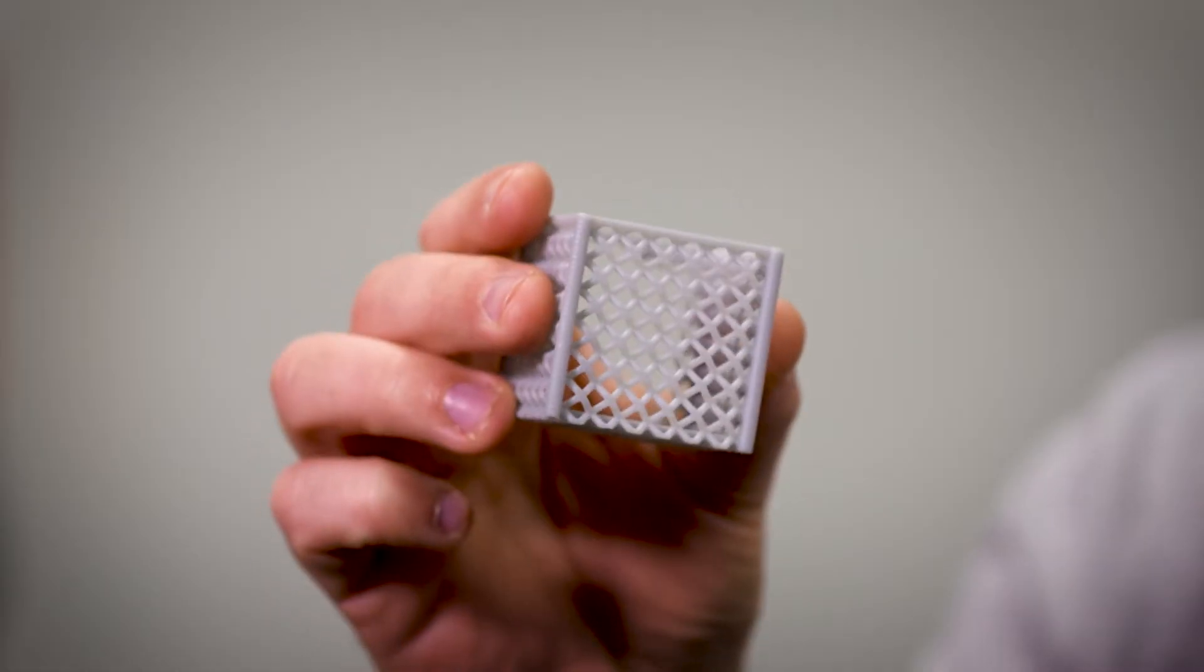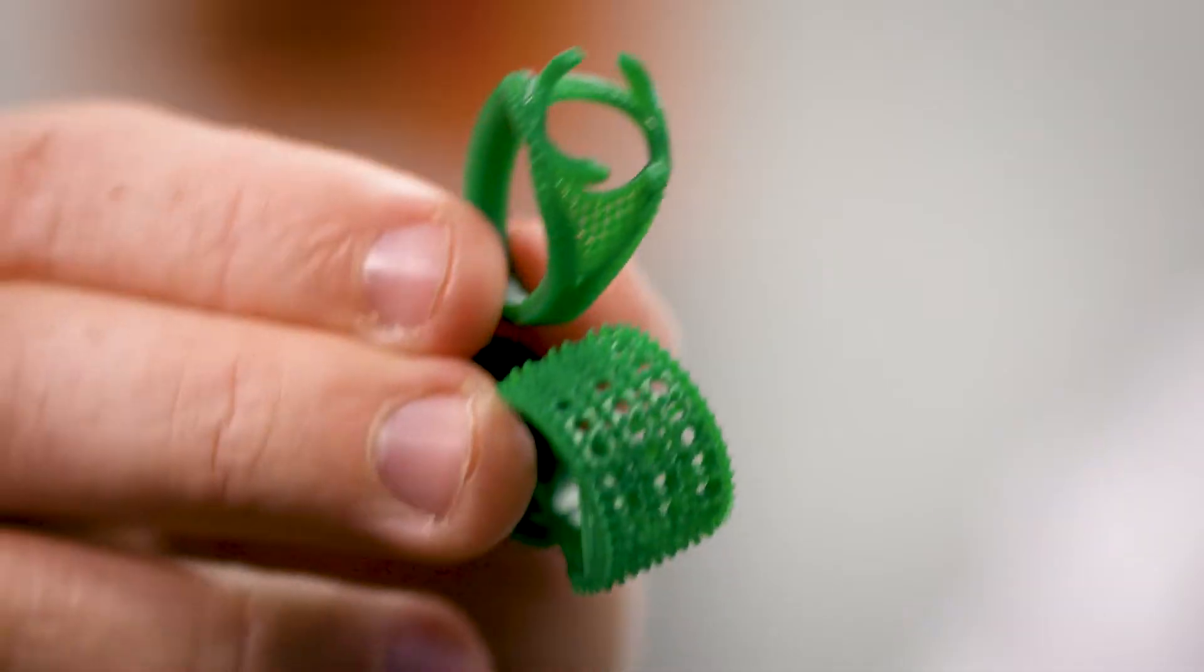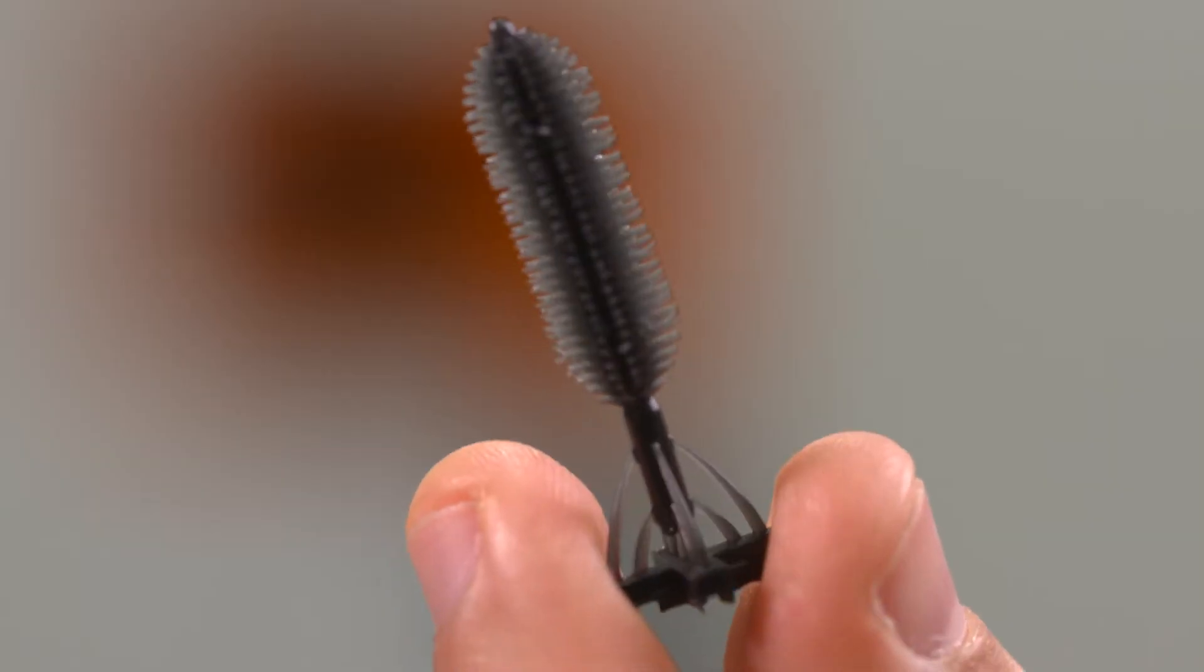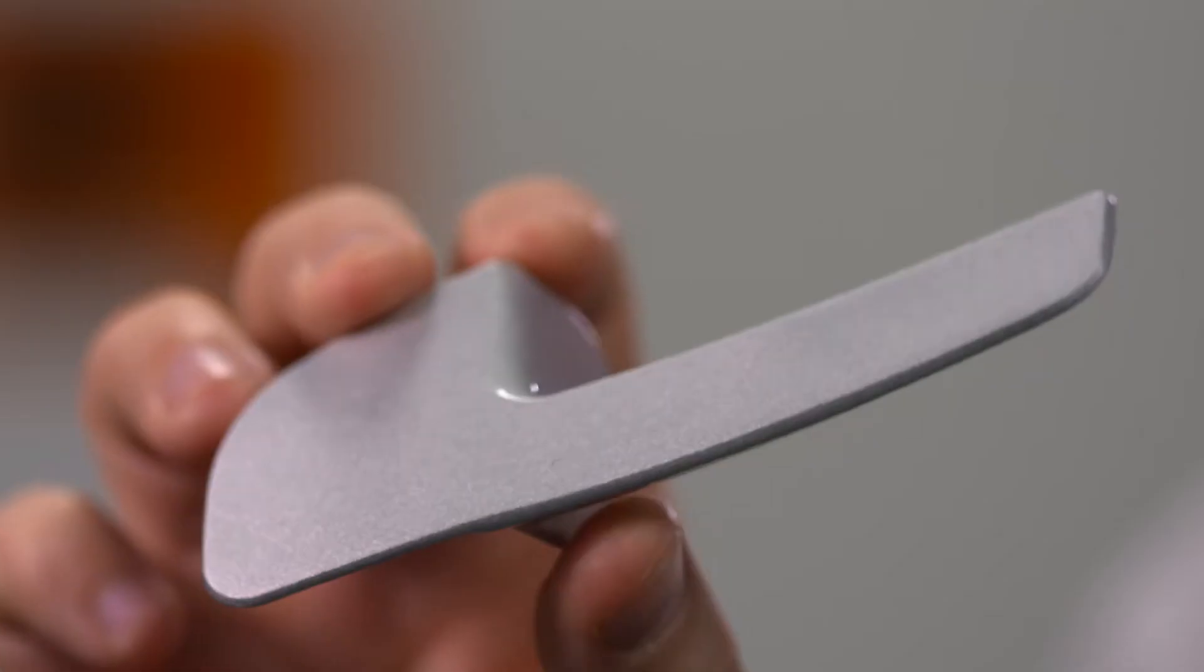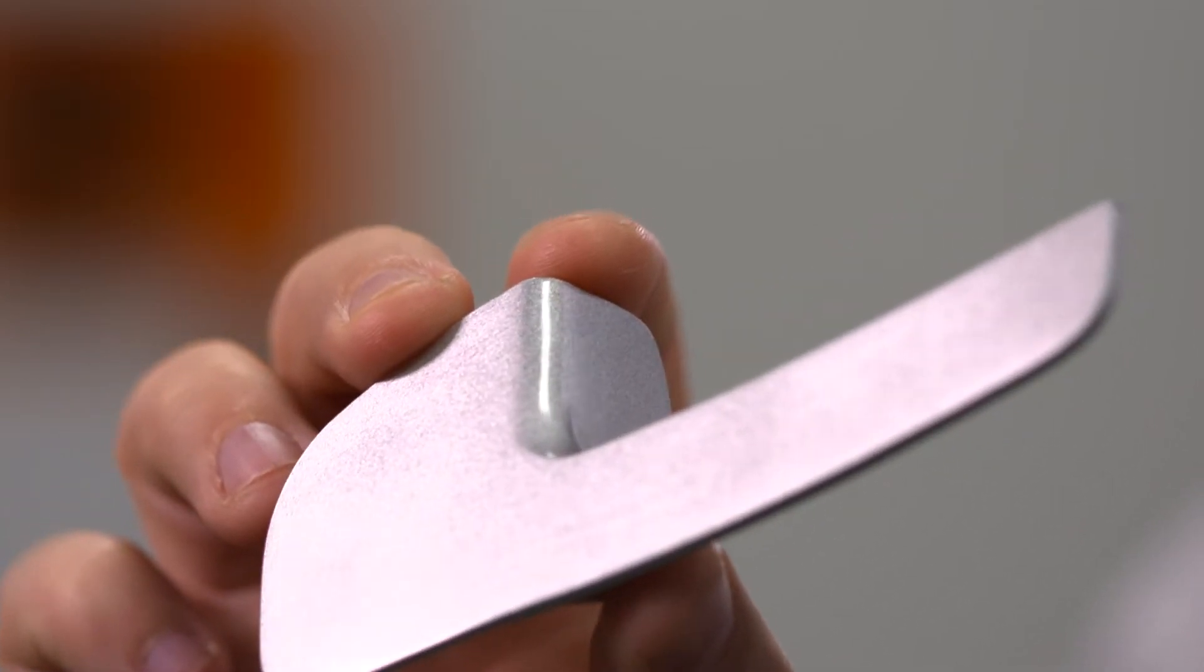There's a choice of rigid materials, elastomeric, a jewelry casting material, and a material simulating polypropylene. Take for example this car door handle prototype printed in under 40 minutes. The exceptional surface quality of this part makes it ideal for painting or plating.